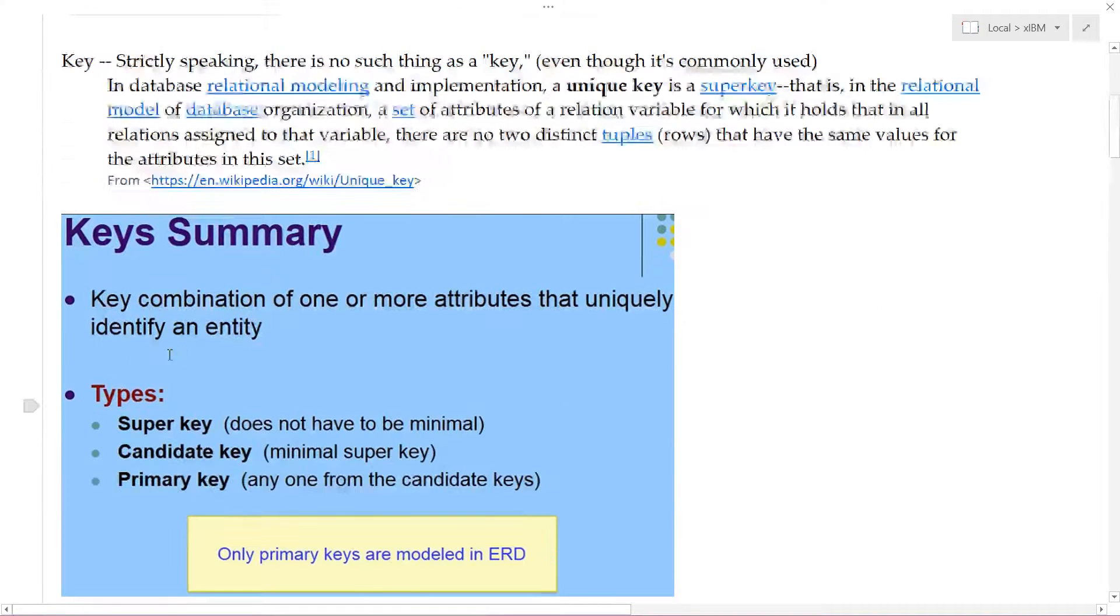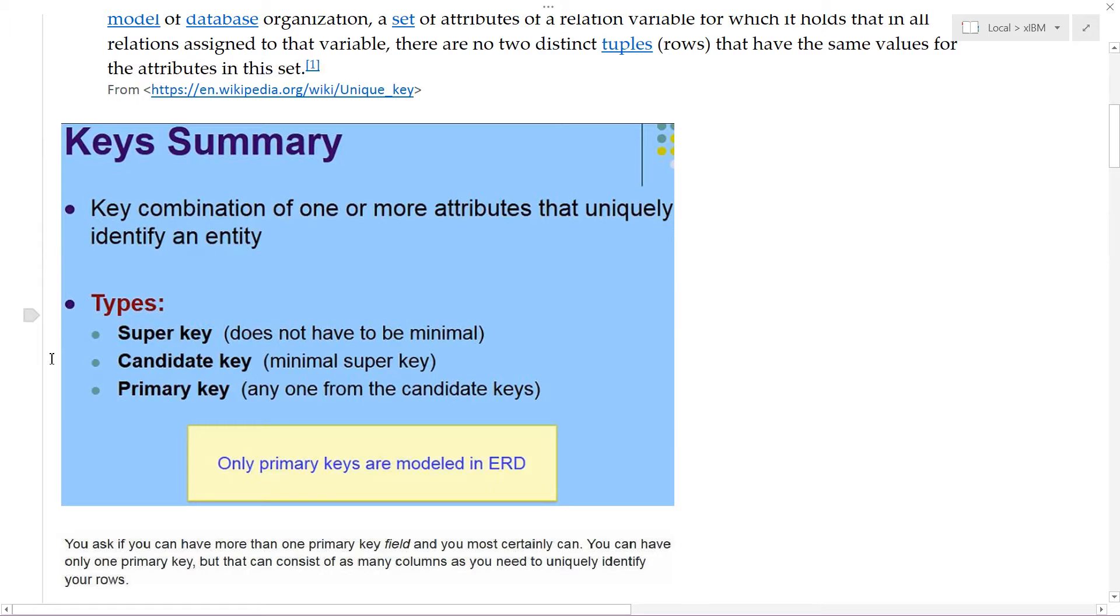So, in other words, each row is unique. Now, when you talk about keys, there are essentially three kinds. You have a super key, the candidate key, and the primary key, the ones we've just been talking about.